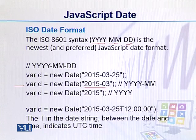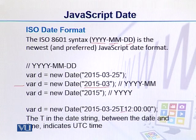In the ISO date format, if we want to mention time, we can also do that using the letter T. We use this here and then we have the UTC format time.